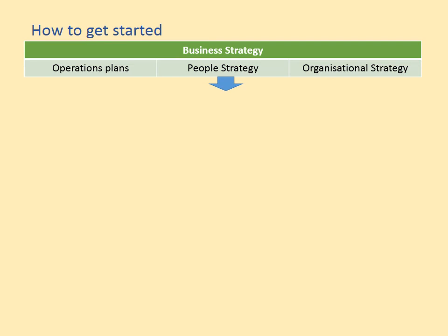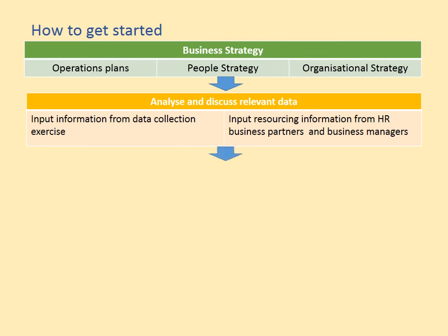You'd also have a people strategy — ideas about what you want from your people, what you want your workforce to look like, and the organisational structure. Once these are settled, you move to analysing and discussing relevant data. This involves a data collection exercise gathering numerical information from across the business, as well as qualitative input from HR business partners and business managers about the skills people have or the skills necessary to perform future job roles.